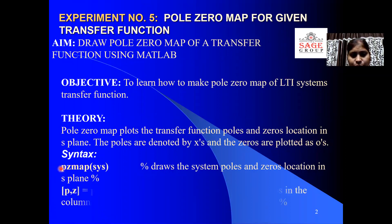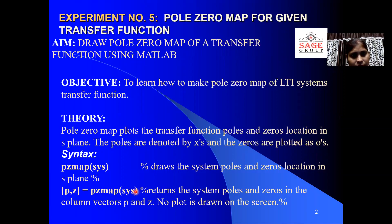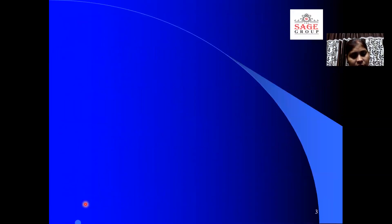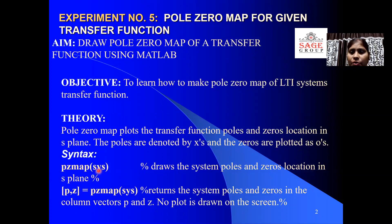The syntax for this is PZmap. The command PZmap(SYS) is used to draw the system poles and zeros location in the S-plane. PZmap is the command, and within the parentheses you write the variable used for the transfer function. The complete syntax for plotting pole and zero locations is: PZmap(variable_of_transfer_function).